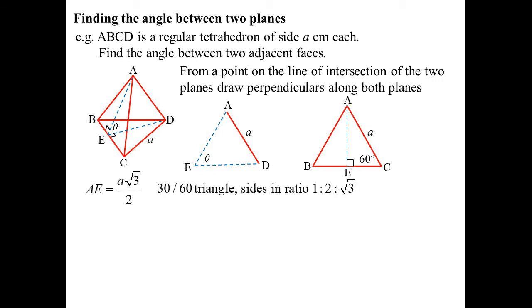Well, I know it's a 30-60 triangle. I could use trig or I could use my exact ratios, and that's what I've used here. I know the 30-60 triangle is always in the ratio 1, 2, root 3. So therefore, AE must end up being A times root 3 on 2. Again, you could use trig to find that as well, and however you prefer to find it is up to you. So I've got dimensions for AE.